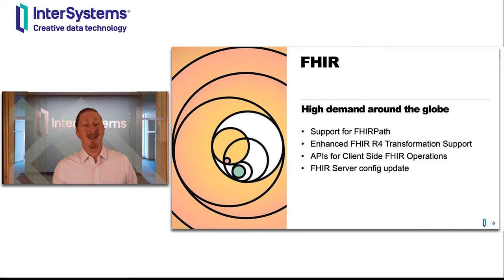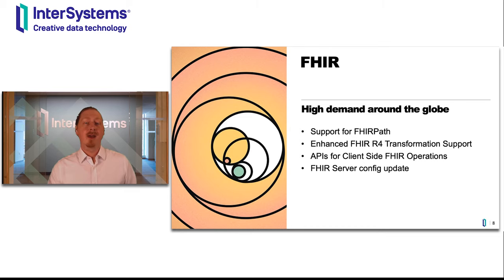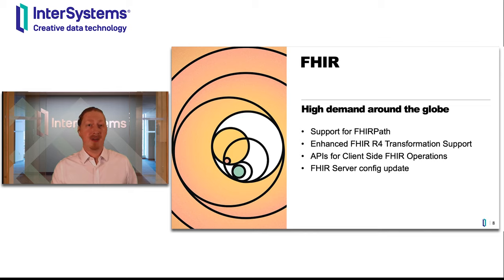FHIR remains on the top of the list for many of our partners around the whole globe. Some governments push more for it than others, but whenever innovation happens and a new project starts, FHIR is involved somehow. That's why we added support for FHIR Path, which is a navigation and extraction language for FHIR and can be compared to XPath for XML. You can find references to FHIR Path across the whole FHIR specification — they're used to express schema-level conditions, search parameter paths, and more.